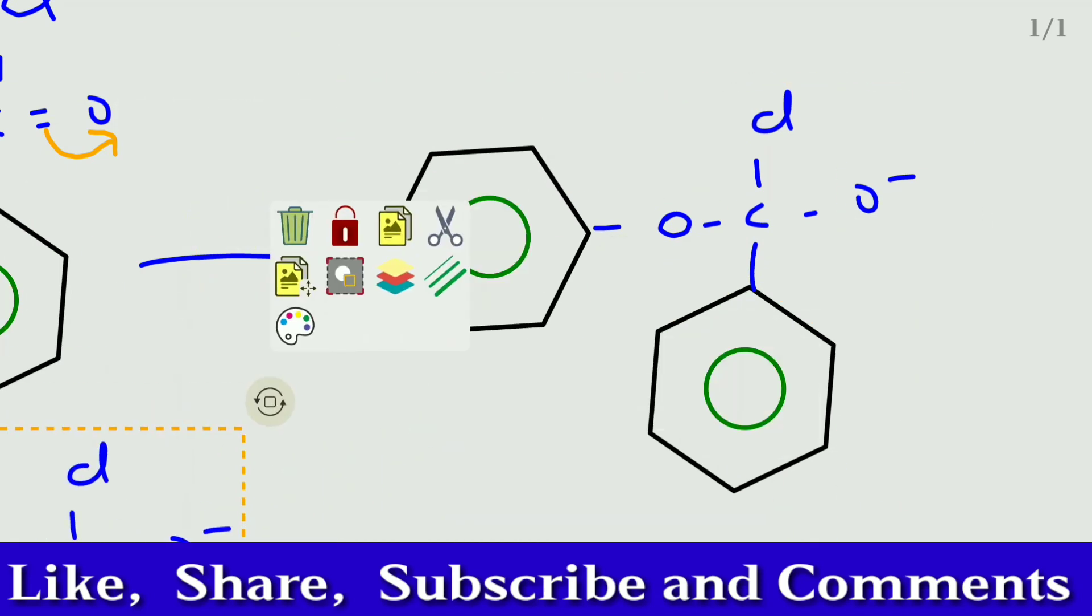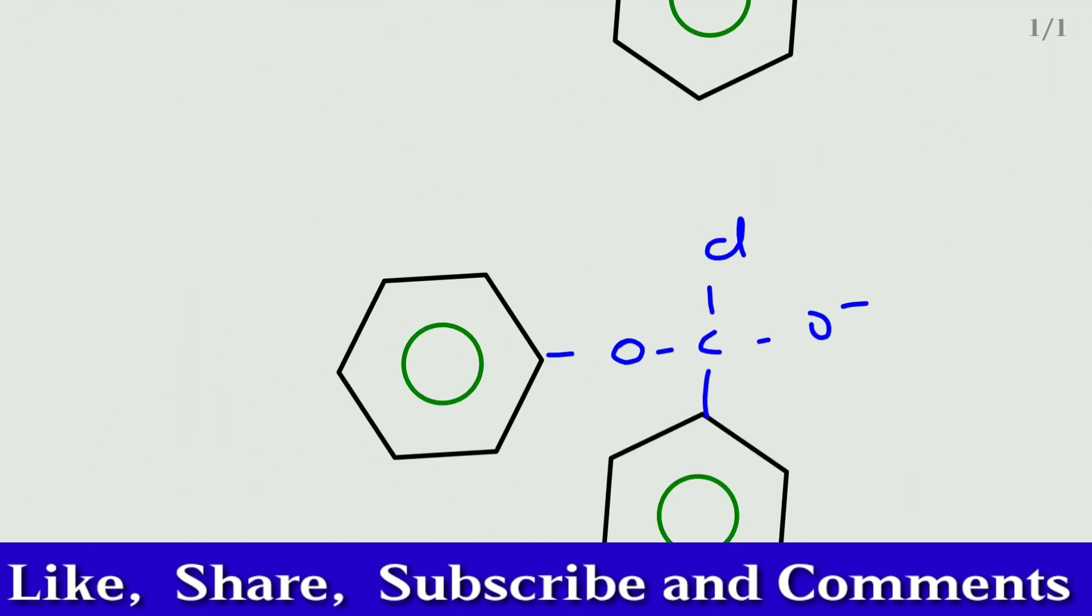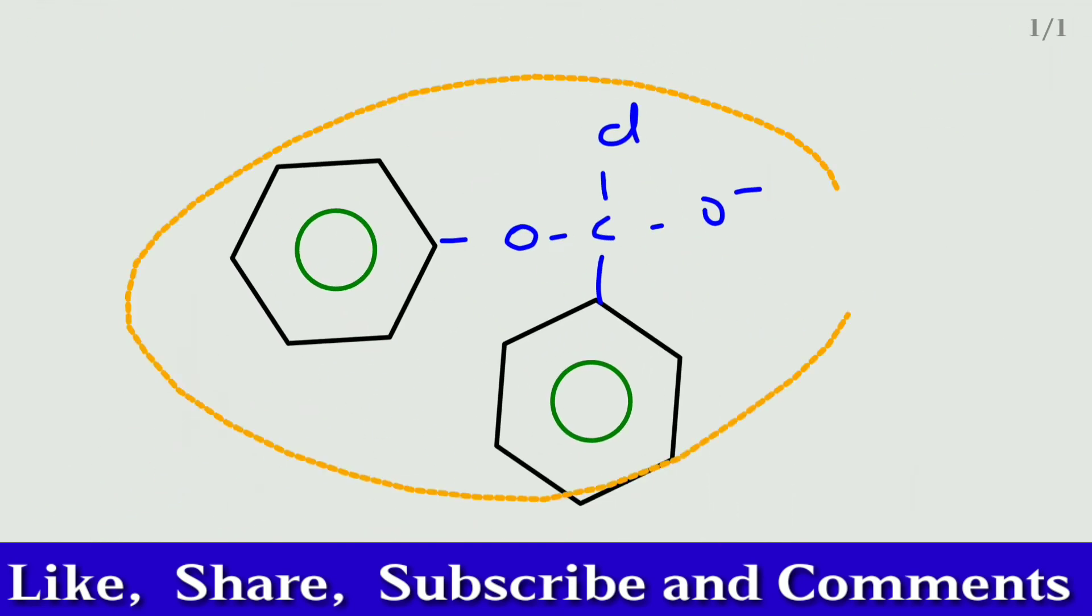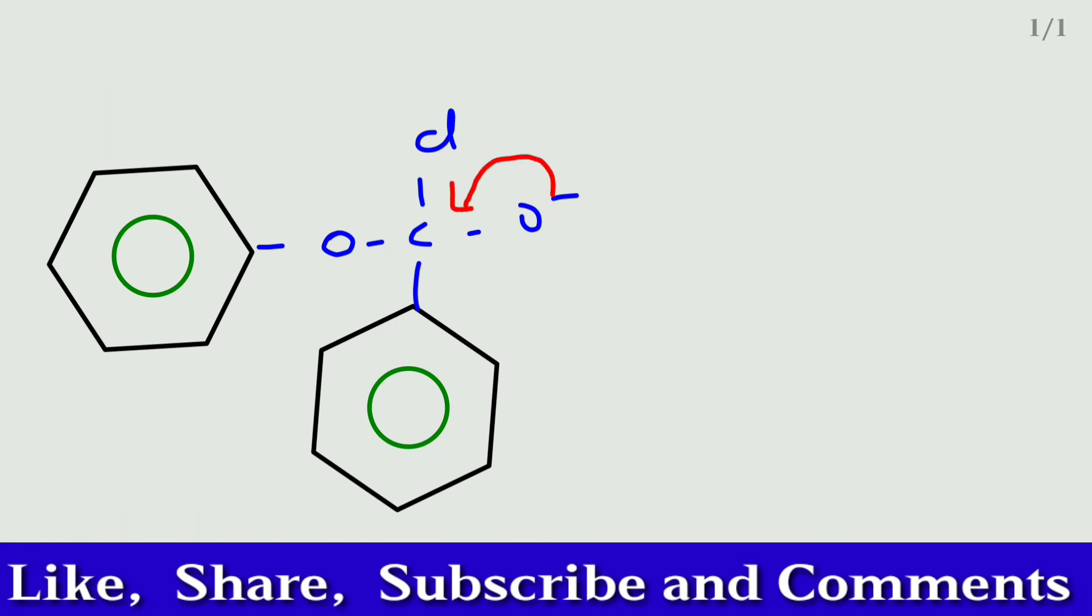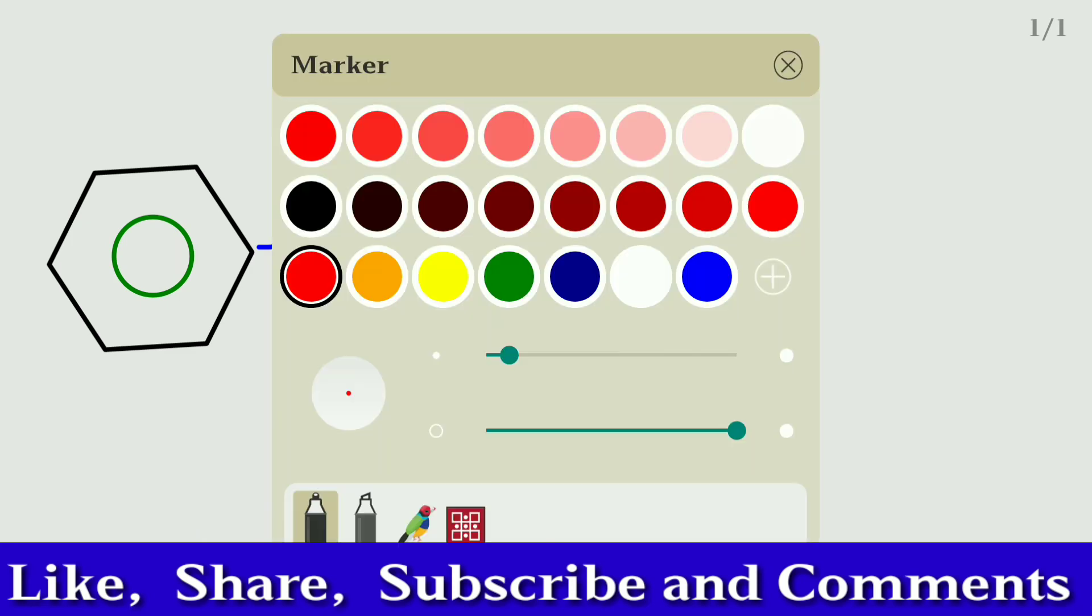Now you come to the third step. In this third step, what happens? Again, the oxygen donates the electron to this carbon, so the carbon-chlorine bond will break.